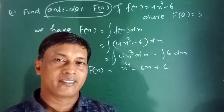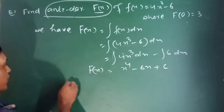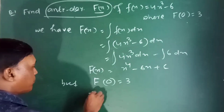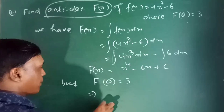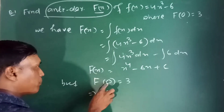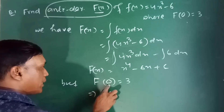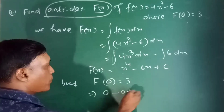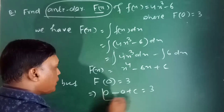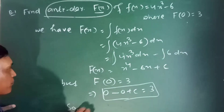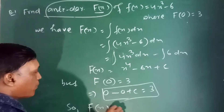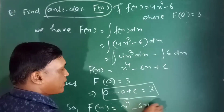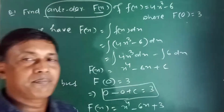Now we are given that f of 0 is equal to 3. This implies: putting x equal to 0 in F of x, we get 0 to the power 4 minus 6 times 0 plus c equals 3. So we find c is equal to 3. Therefore F of x is equal to x to the power 4 minus 6x plus 3.